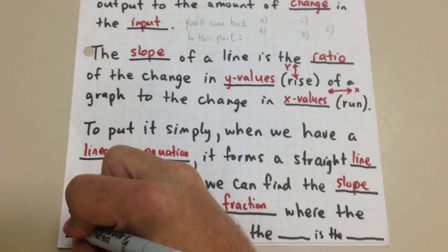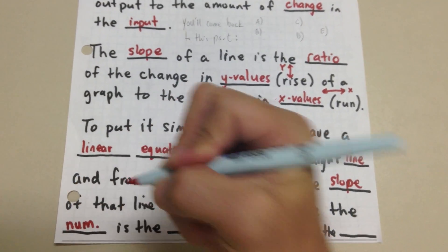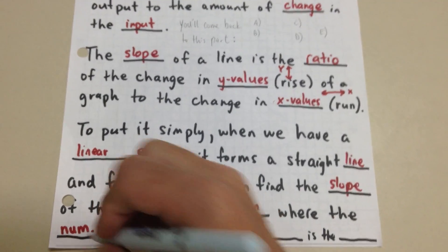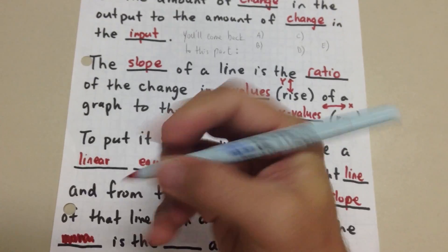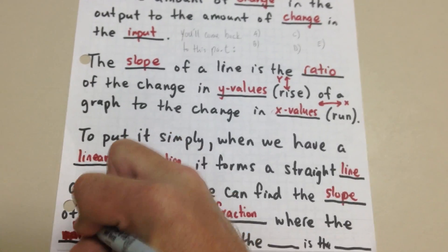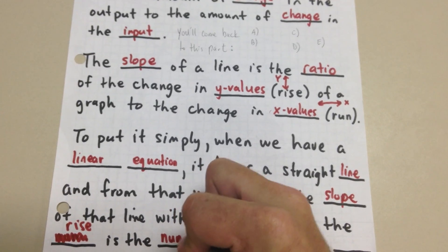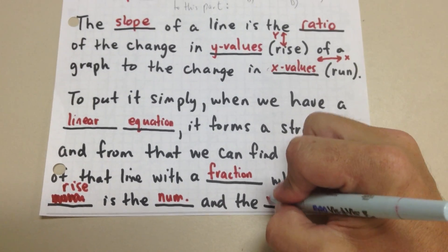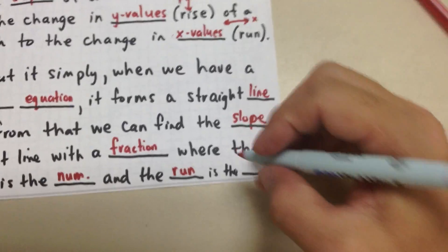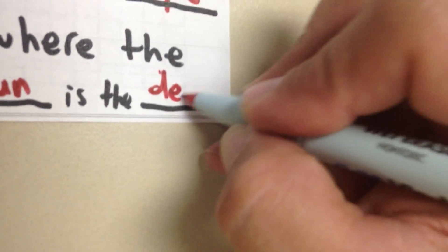Where the numerator... The rise is the numerator. And the run is the denominator. So hopefully you get all this written down. Just pause the video. You can see it all if you pause it.